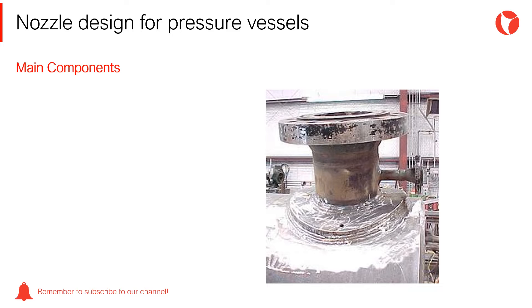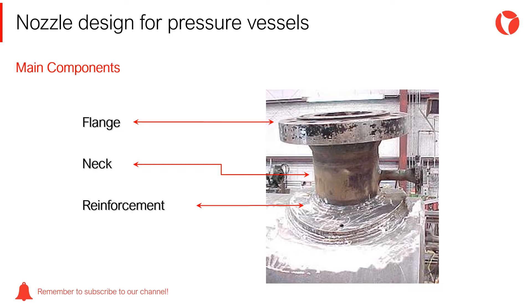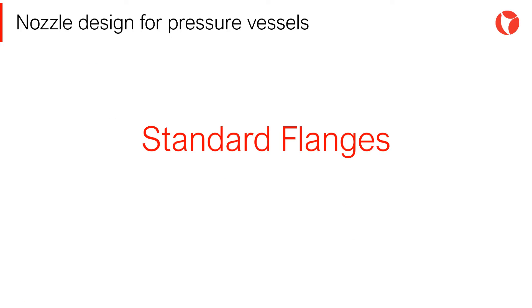The main components of a nozzle are the flange, the neck, and the reinforcement. There are different types of flanges, necks, and reinforcements. Each element will be designed depending on the requirements and service of the equipment. There are many different flange standards to be found worldwide. To allow easy functionality and interchangeability, flanges are designed to have standardized dimensions, though not all flange standards are interchangeable.